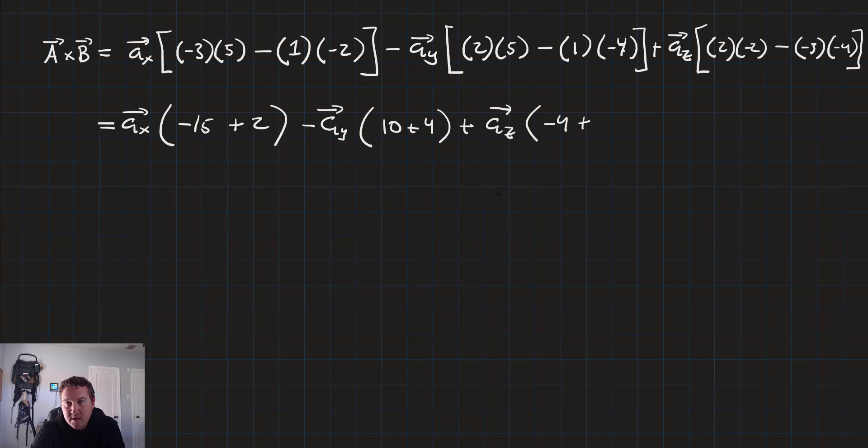So the resulting vector a cross b is equal to minus 13 times a sub x minus 14 times a sub y minus 16 times a sub z.